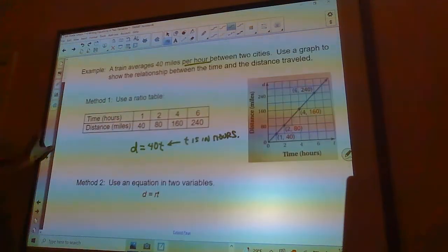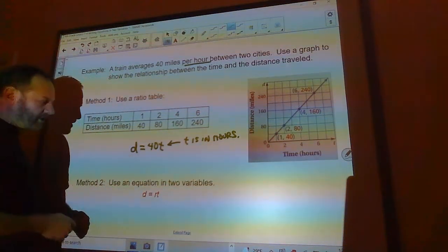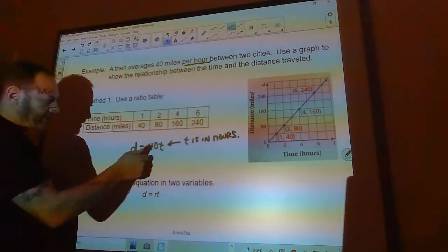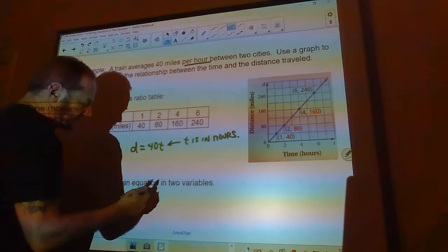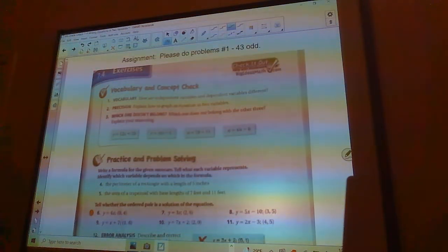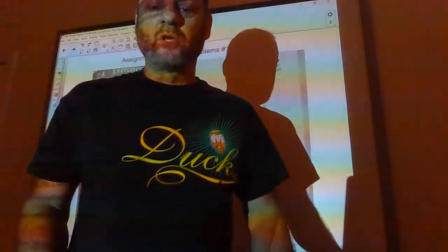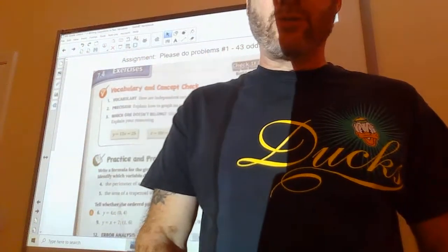Use an equation and two variables. Well, that's pretty much what I did right here. I just shortcutted it. So D equals RT, R is 40. I can plug that in and there's my equation D equals 40 times T. So you're going to get to do problems one through 43 odd in this lesson. And I will talk to you guys tomorrow.